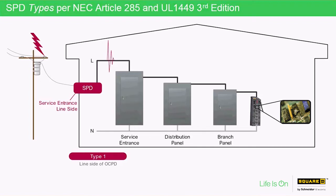Being on the line side of the service disconnect where there are no overcurrent protective devices to protect an SPD, Type 1 SPDs must be listed without the use of an external overcurrent protection device. The nominal discharge current ratings for Type 1 is either 10kA (10,000 amps) or 20kA (20,000 amps), and they can have much higher surge current ratings upwards of 480,000 amps. It should be noted that surge current is the typical rating as to how SPDs are specified by users.